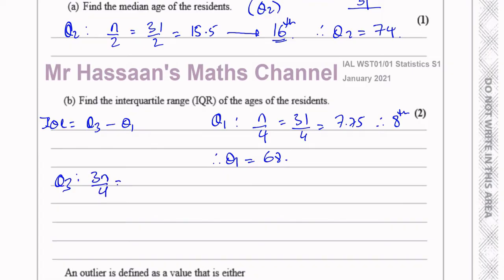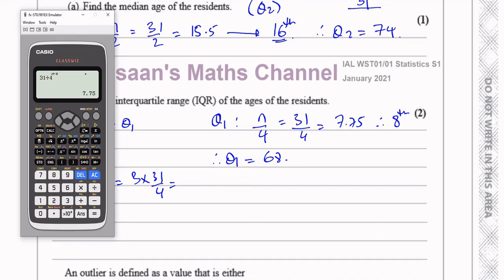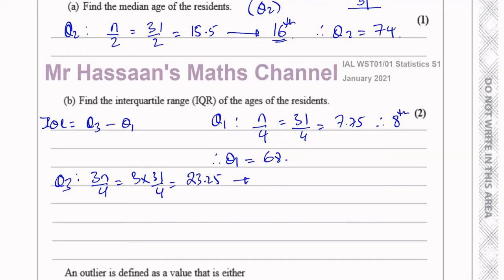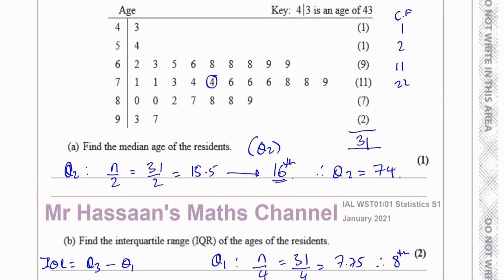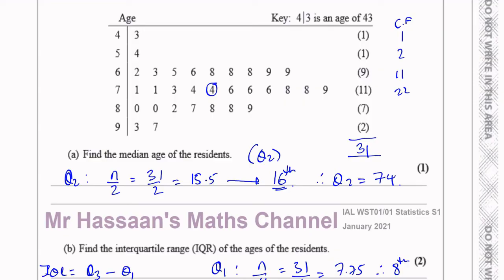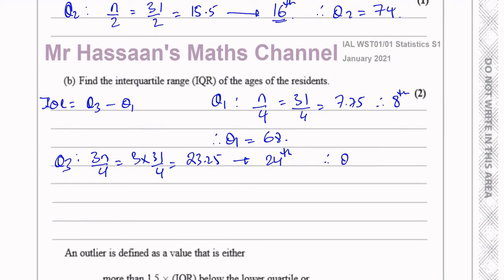To find Q3 we use 3n over 4, which gives the position not the value. That's 3 times 31 over 4, which is 3 times 7.75, giving 23.25. We always round up, so this is the 24th term. Counting up, the 22nd term is the last in the previous group, so the 23rd and 24th are in the 80s — the 24th term is 80. Therefore Q3 equals 80, and the interquartile range is Q3 minus Q1, which is 80 minus 68 equals 12.